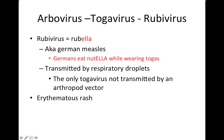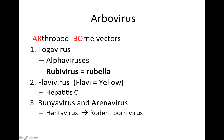Within Arbovirus we've got togavirus, flavivirus, bunyavirus, and arenavirus. Within togavirus we have alphavirus and rubivirus, and rubella. I put rubella in bold because this is the main one that we need to know about from the arbovirus group.